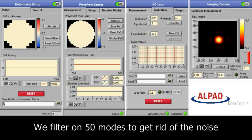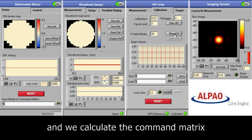Next we choose the number of modes which we wish to use for our command matrix, and then we click here to calculate our command matrix.